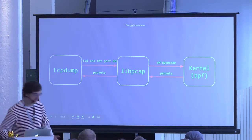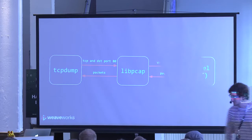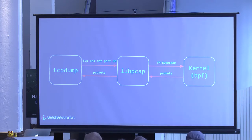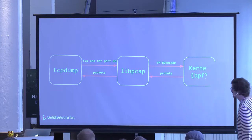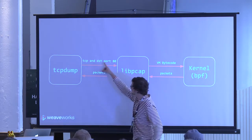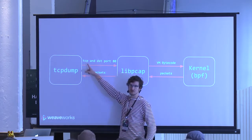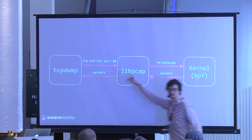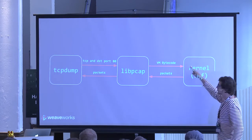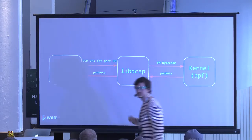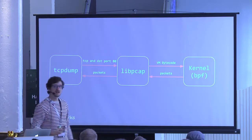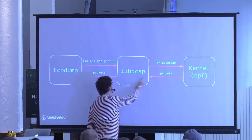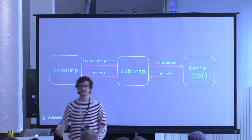In practice, TCP dump uses a library called libpcap, which works on Unix and also on Windows — though on Windows it doesn't use BPF. You pass it a filter expression like 'TCP protocol, destination port 80.' libpcap compiles that expression into BPF bytecode, which is injected into the kernel. The kernel then runs that virtual machine on every single packet, and based on the return value of that bytecode it filters the packet and passes it back to TCP dump, which dissects it and shows it to you.